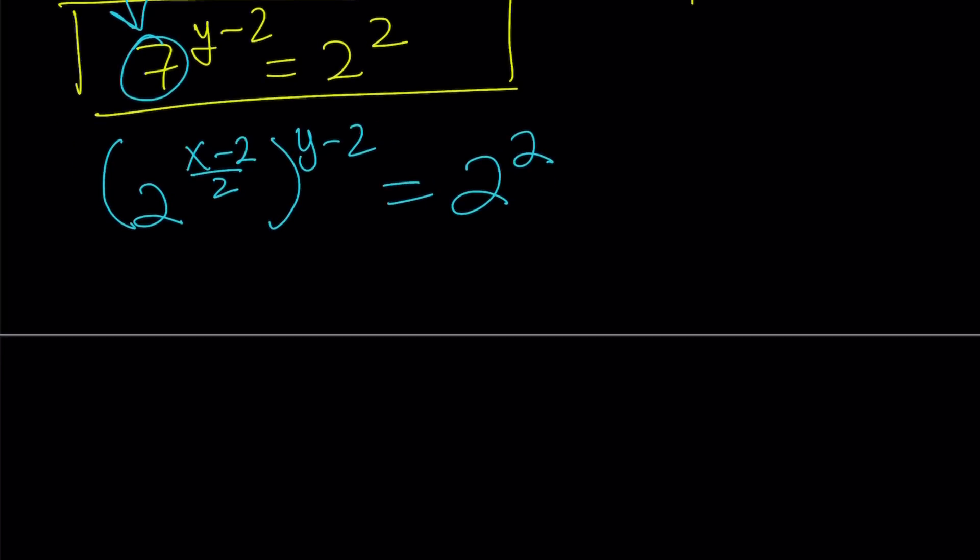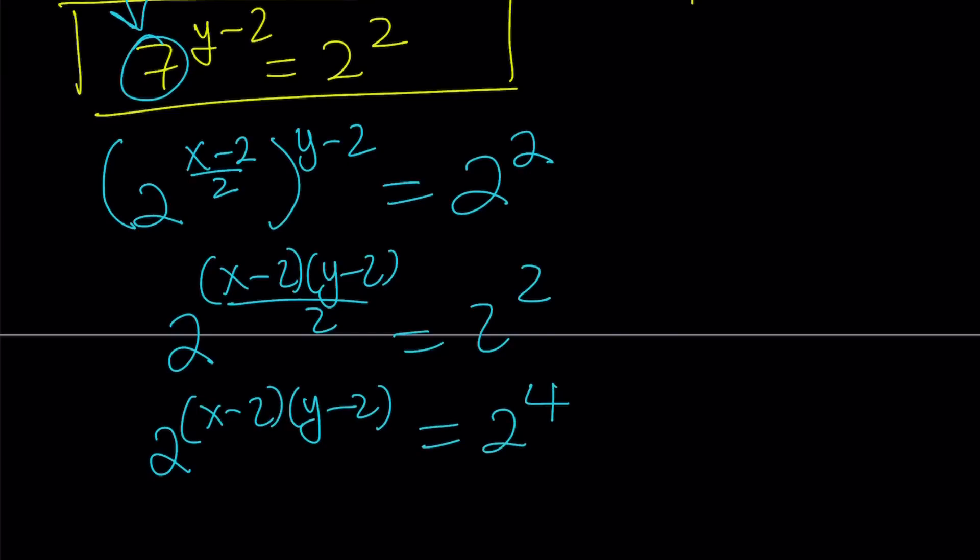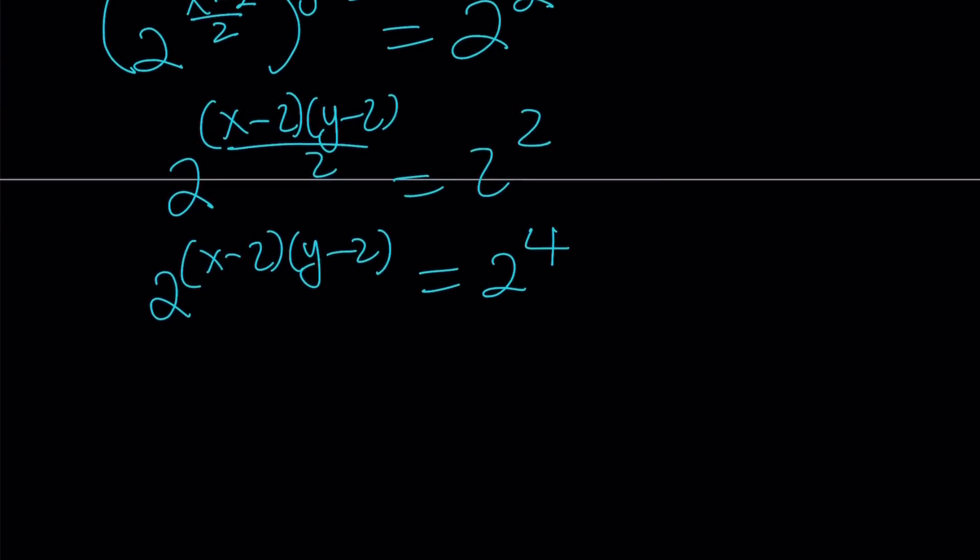So we can go ahead and multiply the exponents. That's going to be like x minus 2, y minus 2, divided by 2, equals 2 to the second. Raise both sides to the second power so you can get rid of the fraction. And now this gives me 2 to the power x minus 2, y minus 2 equals 2 to the power 4. And since the bases are equal, exponents are equal. So we can safely say that x minus 2 times y minus 2 is equal to 4.